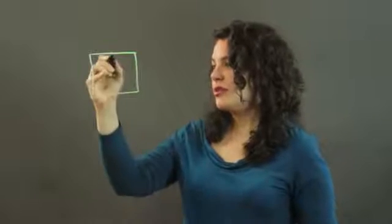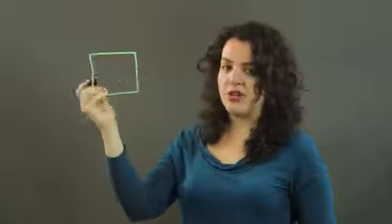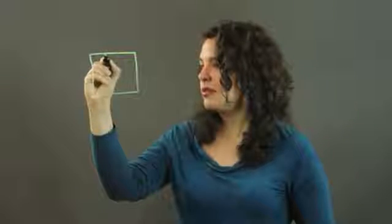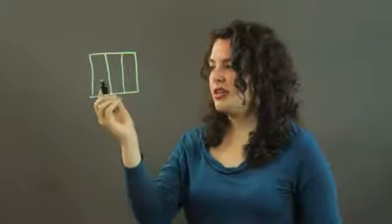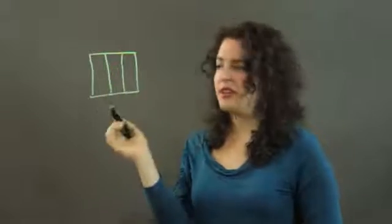And what you want to do is divide it into thirds vertically. So right now we have three even parts, roughly. It's hand drawn.